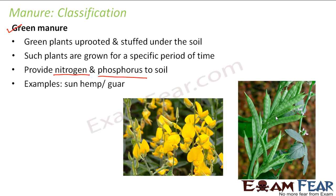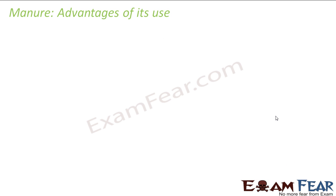So those are the two types of manure: compost and vermicompost, and green manure. What are the advantages of using manure? The first advantage is that it increases the fertility of the soil, improves the soil structure, and as a result crop production increases. Plants get enough nutrients and therefore crop production is enhanced. But there are additional advantages as well — for example, manure is non-toxic, meaning there are no toxic materials involved in its preparation or constituents.